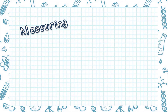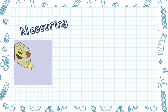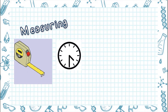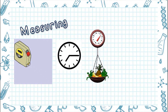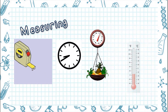Next, let's go to measuring. Measuring means to find out how far something moves, or how long an object is, or how warm or cold something is. We use measuring tools such as measuring tape, timer, weight scale, and thermometer to measure.